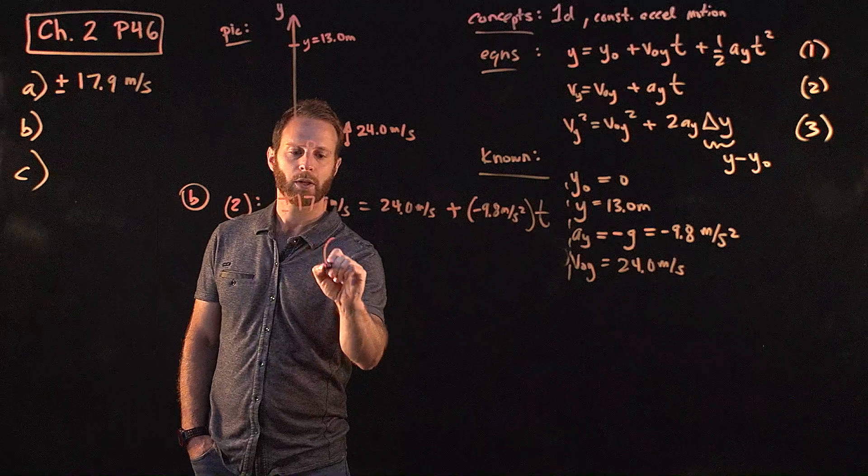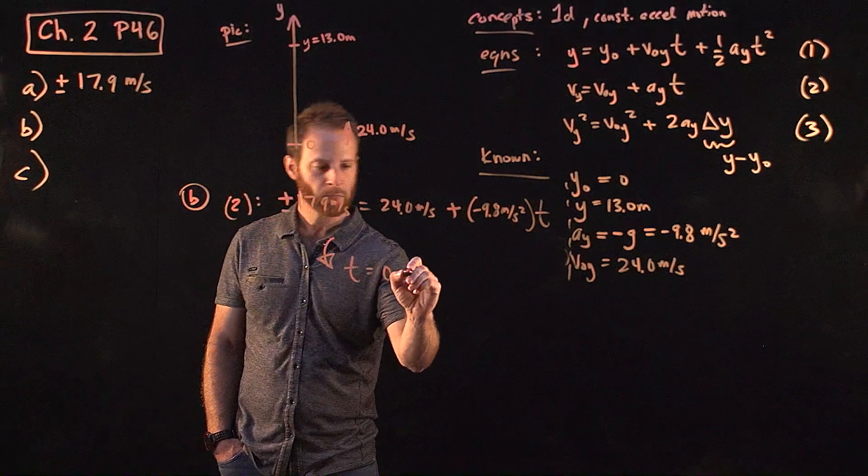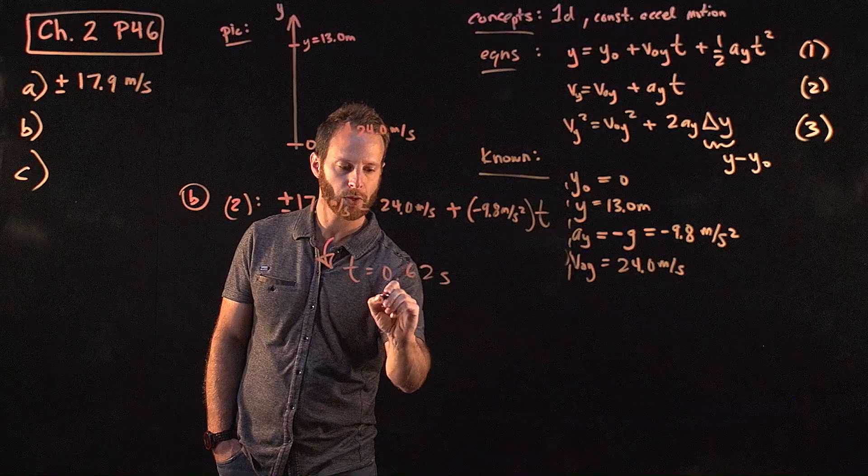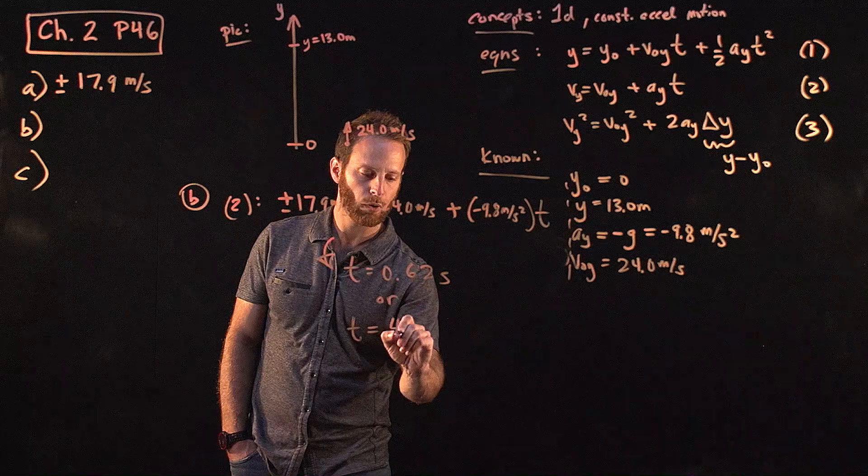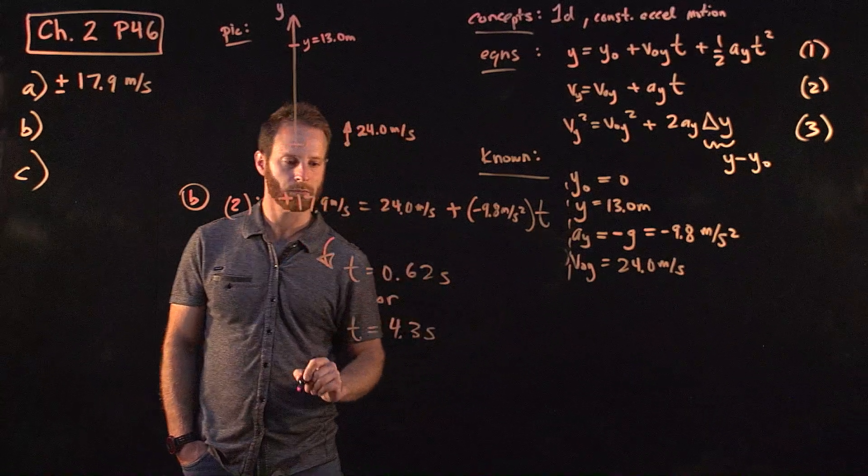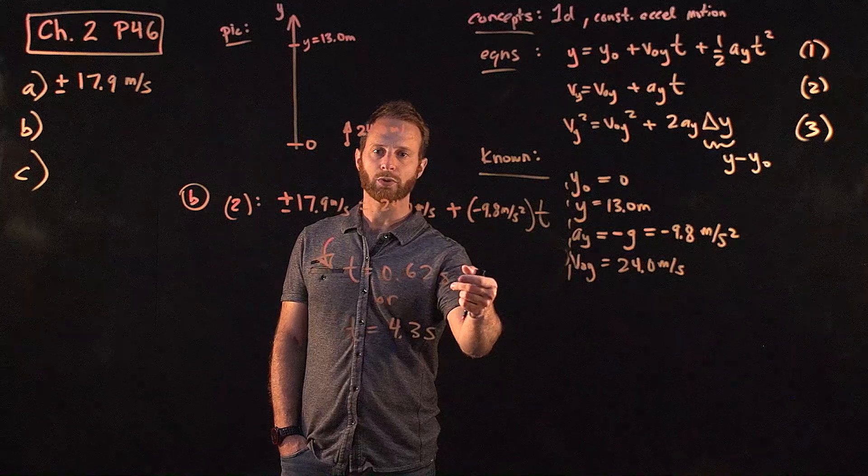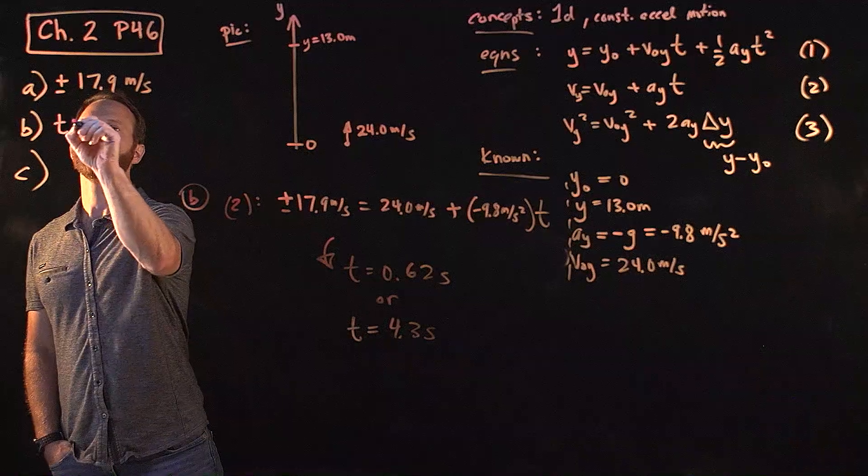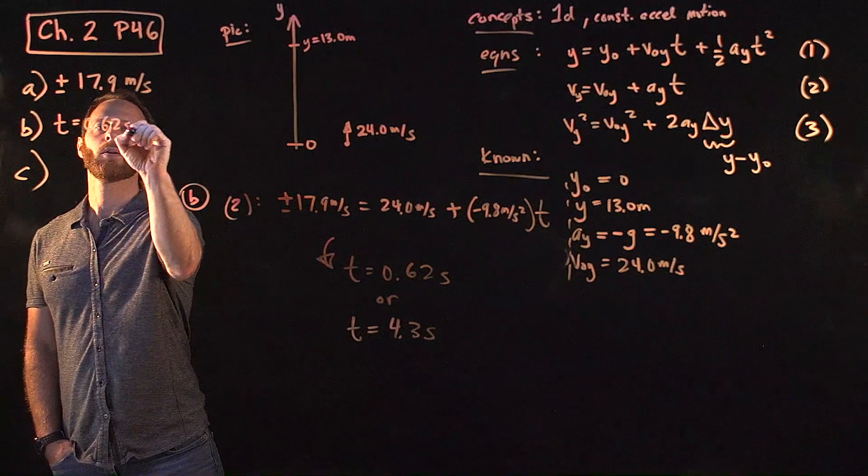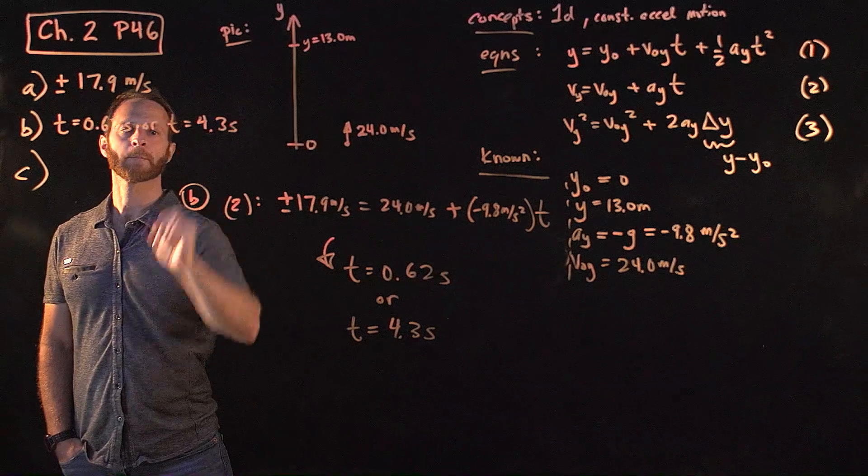And so what you realize is you might get either T is equal to 0.62 seconds or T is equal to 4.3 seconds. So you have two choices. It turns out that we're going to use this first number, but actually, technically, both of these are valid. So let's write both. Okay.